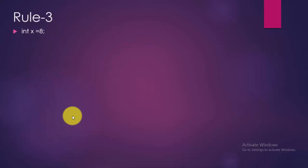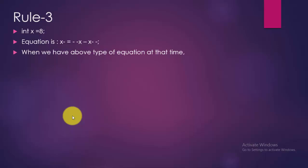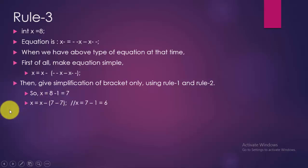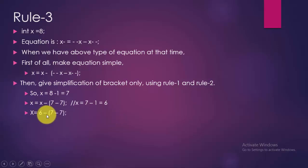Rule number 3. We have an integer variable x = 8, and our equation is x -= (--x - x--). When we have this type of equation, first make the equation simple: x = x - (--x - x--). Now apply rule 1 and rule 2 to simplify the bracket only. So --x gives 8 - 1 = 7, and x-- passes 7 then decrements, giving x = 6. So x = x - (7 - 7). Finally x = 6.